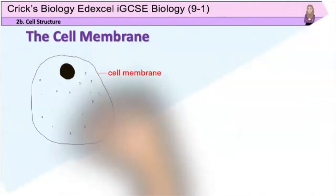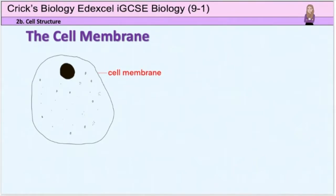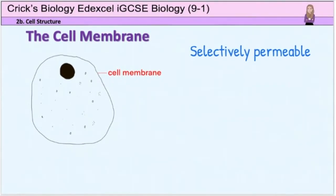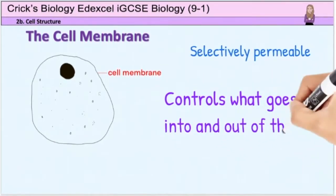Around the outside of the cell is the cell membrane. This is a thin layer made mainly of lipid. The membrane is partially permeable, which means only certain substances can move through. It can also control the passage of substances due to having special channels and pumps, so it is known as selectively permeable. Therefore, the job of the cell membrane is to control what goes in and out of the cell.